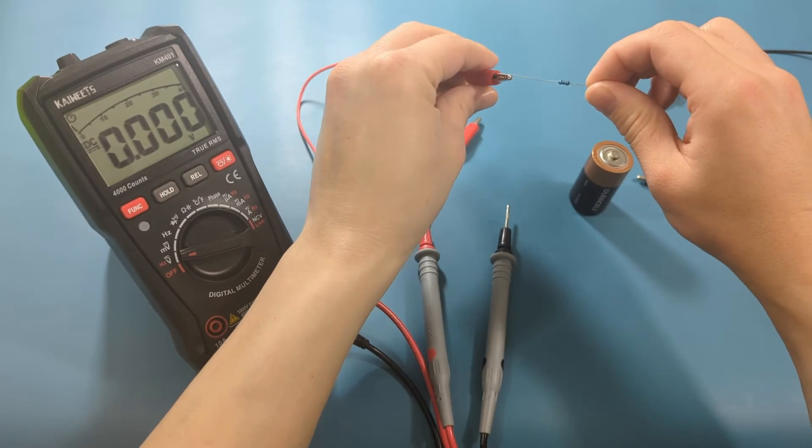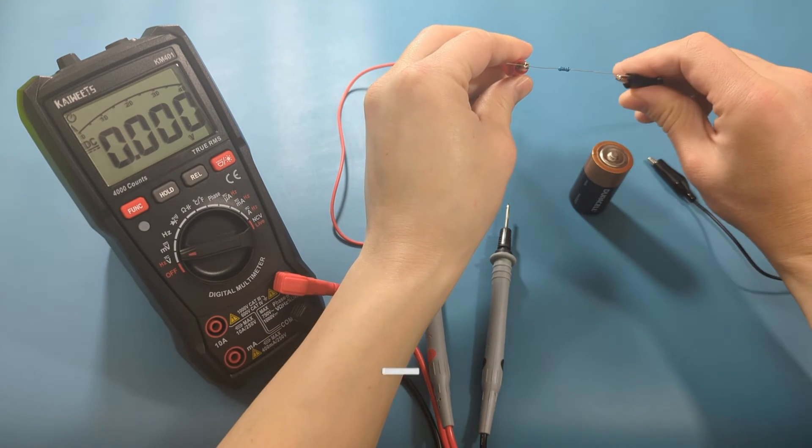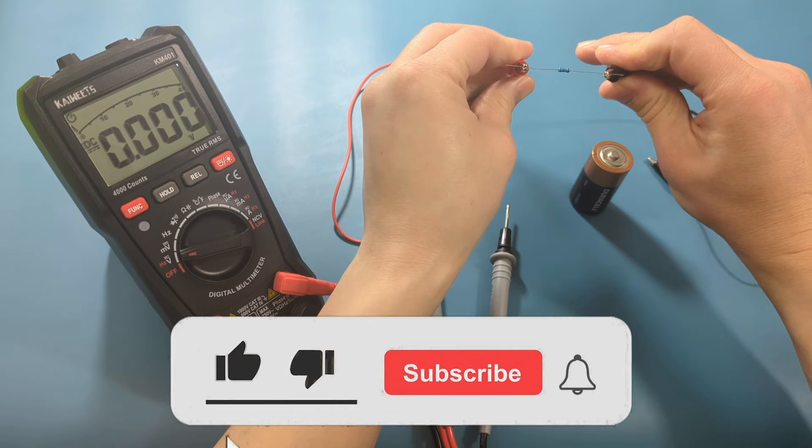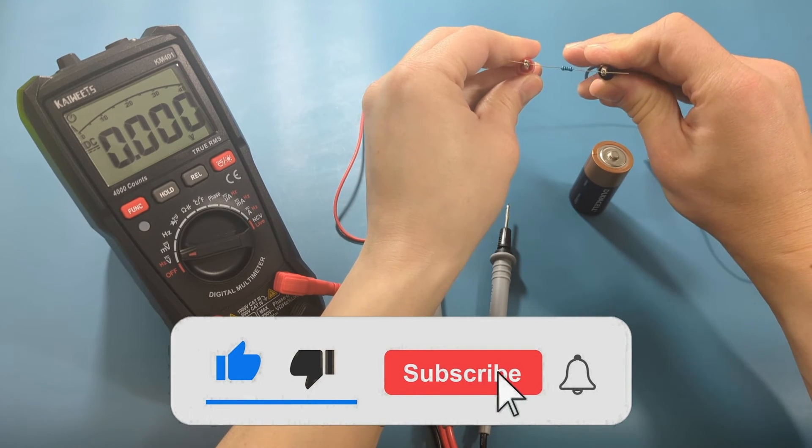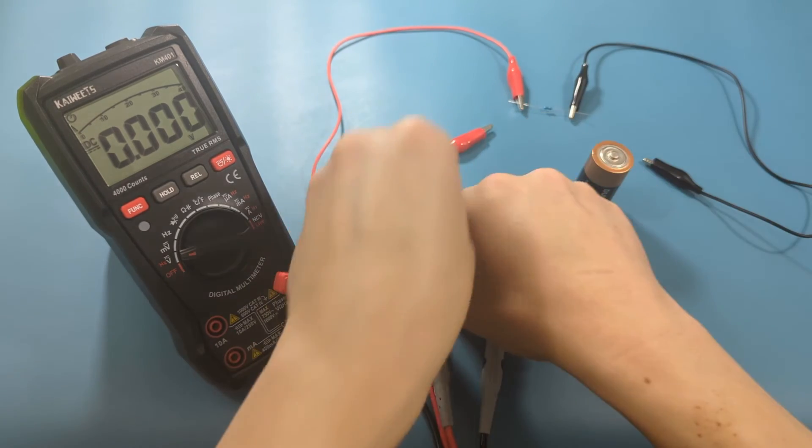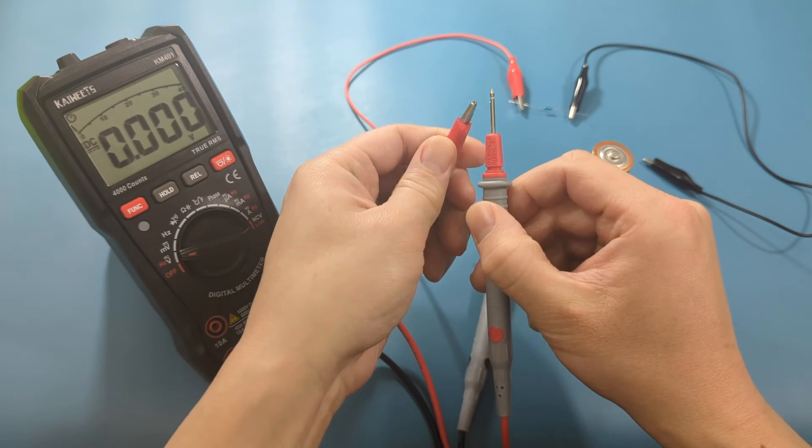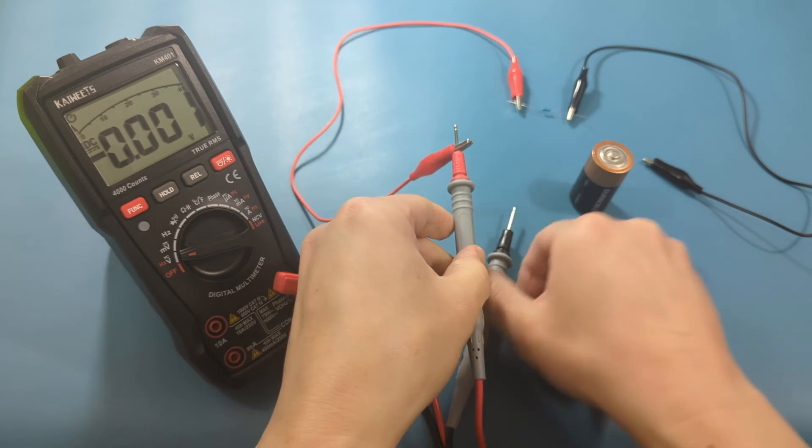Connect the alligator clips to the resistor. Connect the other end of the alligator clips to the probes.